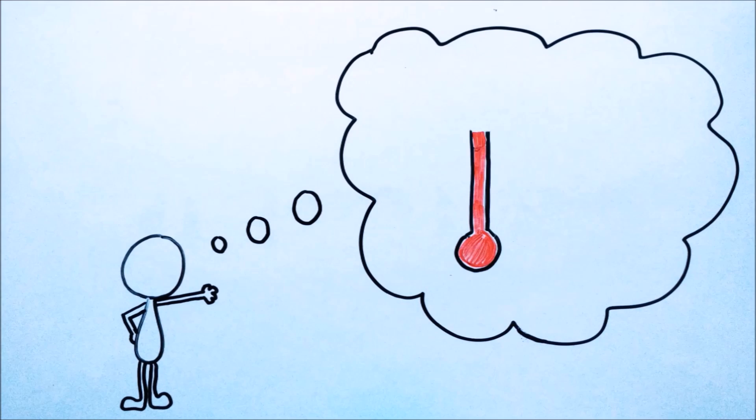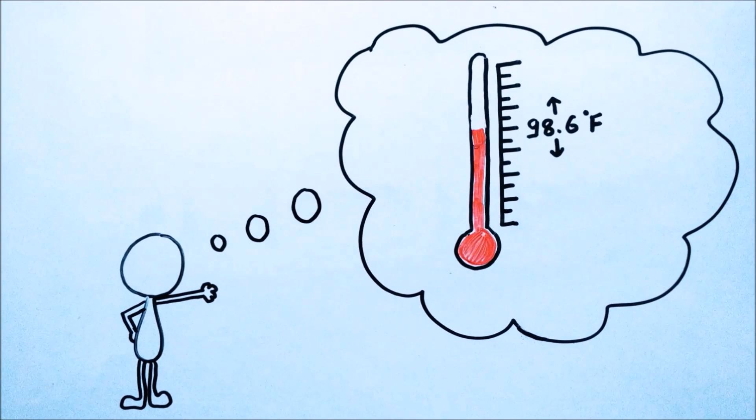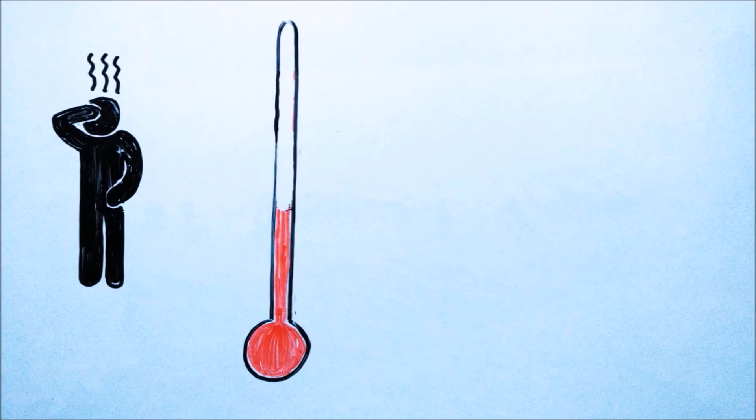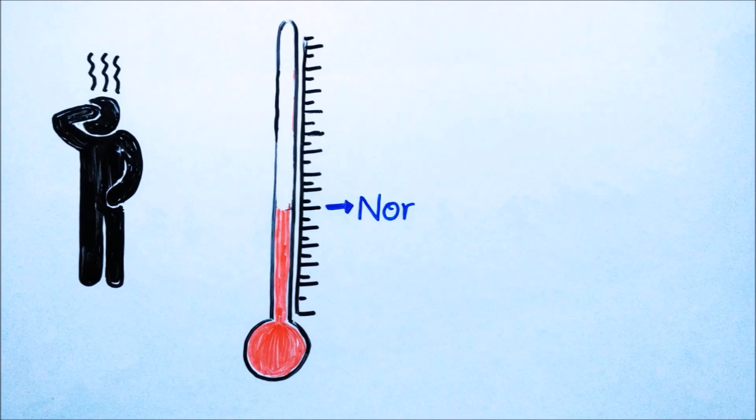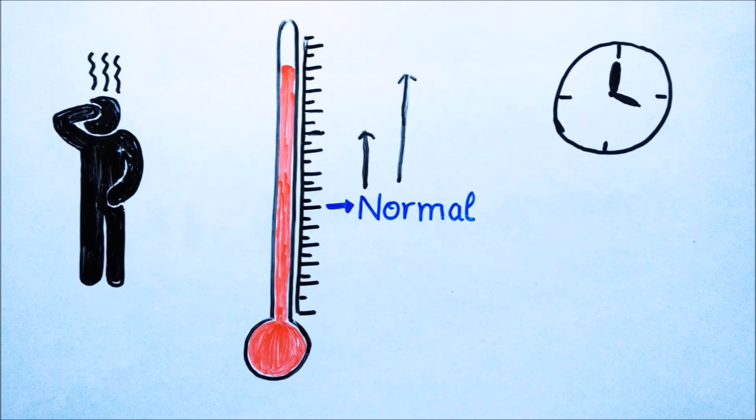Most people think body's normal temperature is 98.6 degree Fahrenheit, but it is also normal if temperature varies by 1 to 2 degree Fahrenheit during day. Person with fever may have daily fluctuation in temperature about 5 to 9 degree Fahrenheit above normal with the highest level occurring in the late afternoon.